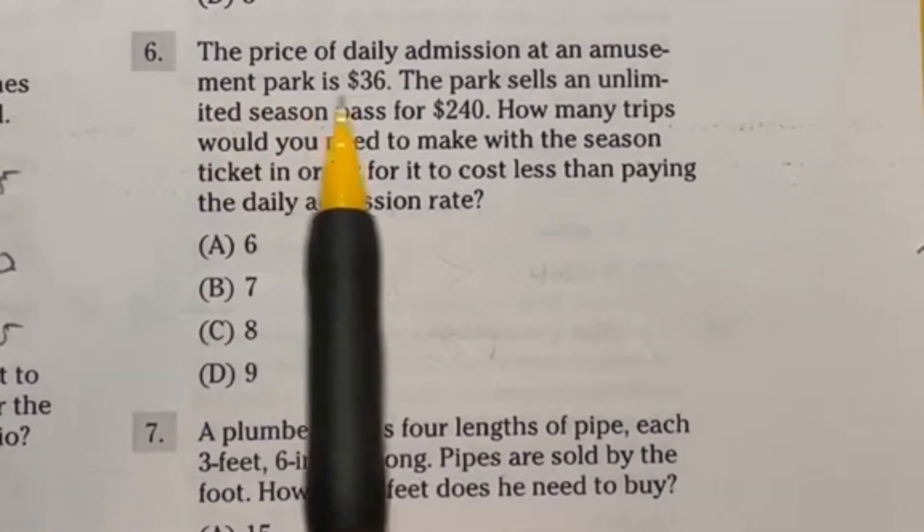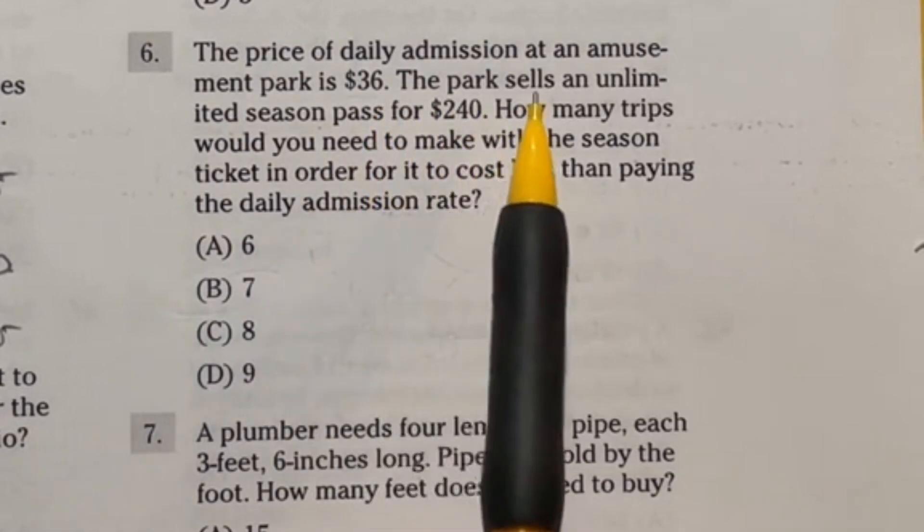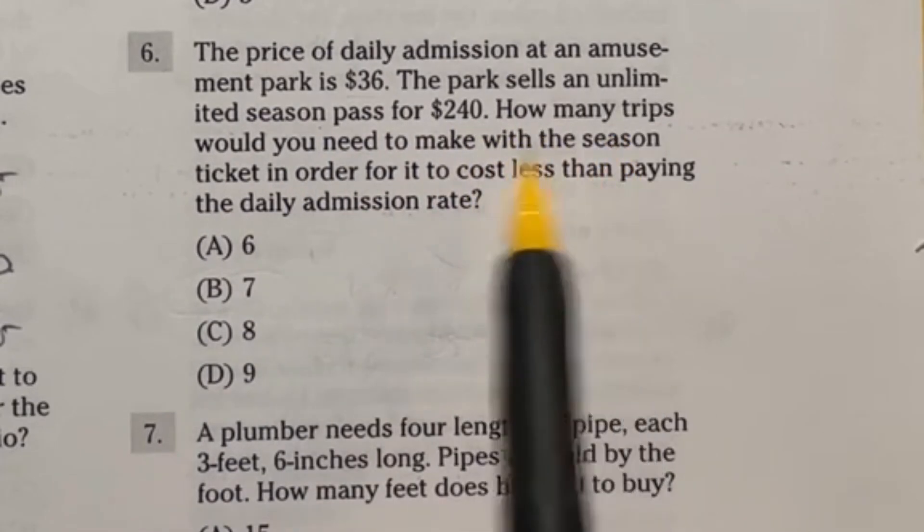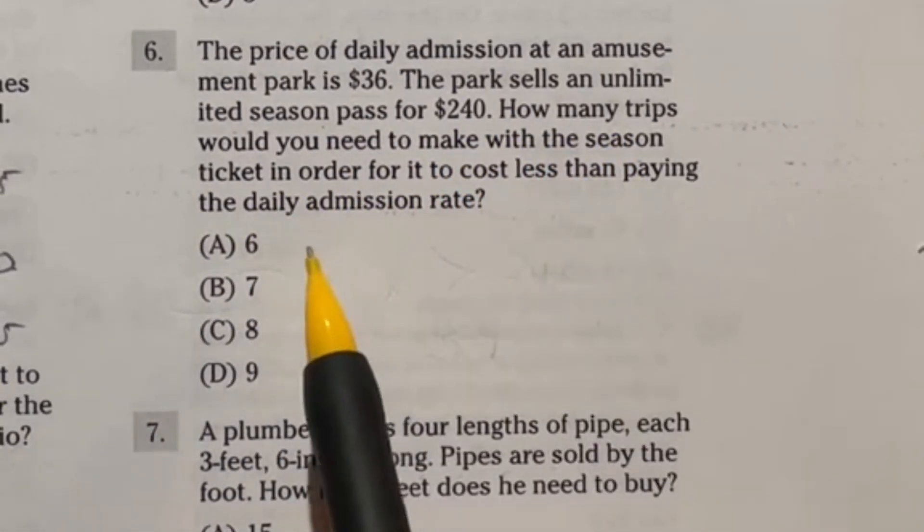Today we're looking at number six. It says the price of daily admission at an amusement park is $36. The park sells an unlimited season pass for $240. How many trips would you need to make with the season ticket in order to cost less than paying the daily admission rate?